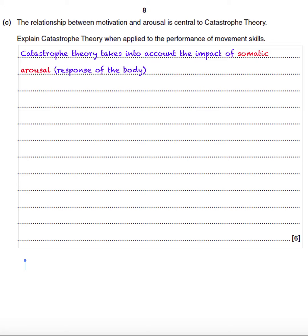So the full opening sentence reads: 'Catastrophe theory takes into account the impact of somatic arousal (response of the body) and cognitive arousal (stress, worry and anxiety) upon sporting performance.'